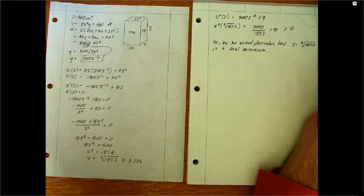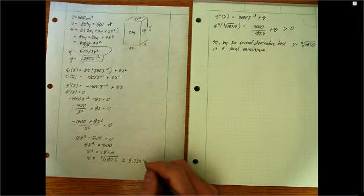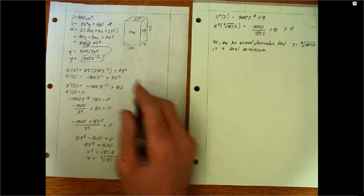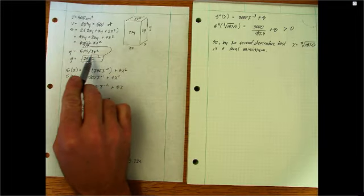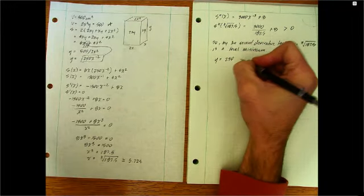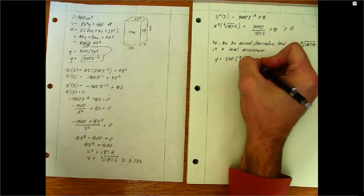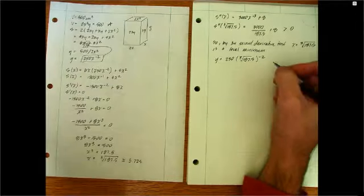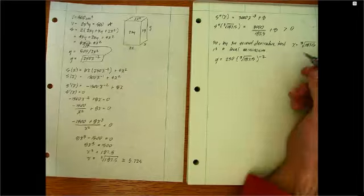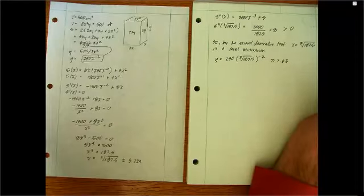So 2X is pretty easy. We just multiply that times 2, but we'd probably want to know what Y is as well. So let's go ahead and search back through here. It looks like we could find Y as a function of X right here. So Y is equal to 250 times our X value, the cube root of 187.5 raised to the negative 2. To spare you the calculation, I went ahead and calculated that already. And it's roughly 7.63. Of course,